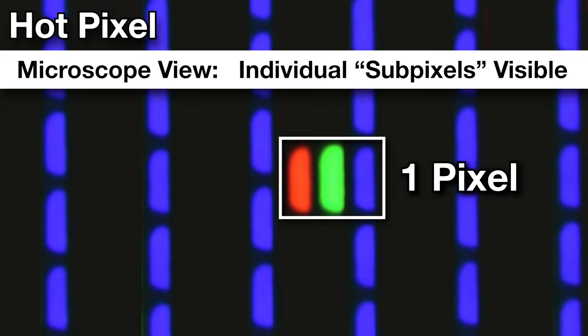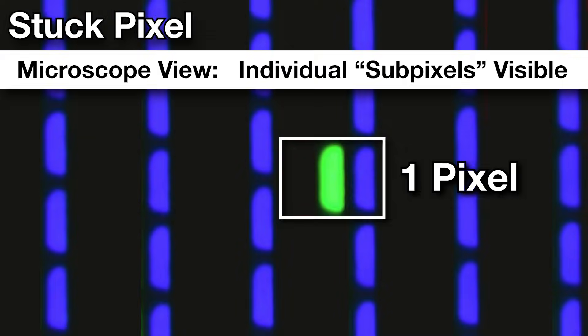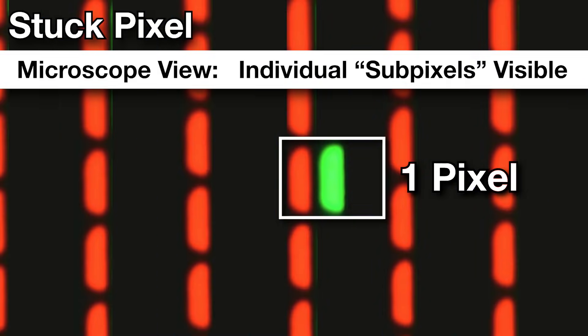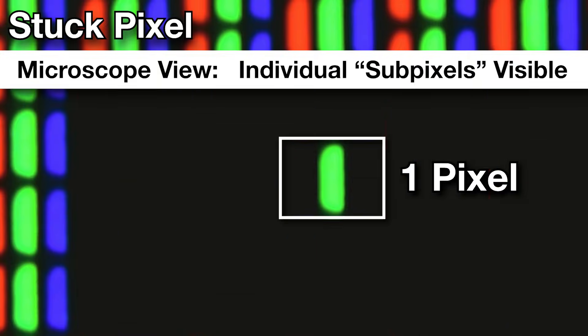The next type is a hot pixel, which is the exact opposite — it's all white, so all three red, green, blue subpixels are always on. At a distance it looks like it's just a white pixel no matter what it's supposed to show. The third type is a stuck pixel, where one or possibly two of the subpixels — red, green, or blue — is always stuck on. So even if the monitor is supposed to be showing black, it's going to still have the green, blue, or red always on. In my monitor you can see that I do have a stuck green pixel, which I'm going to use for the demonstration.